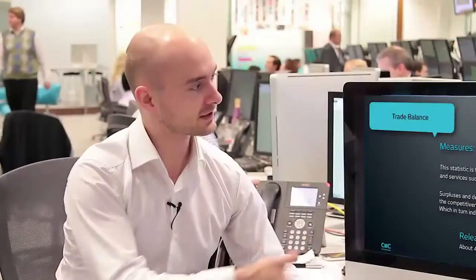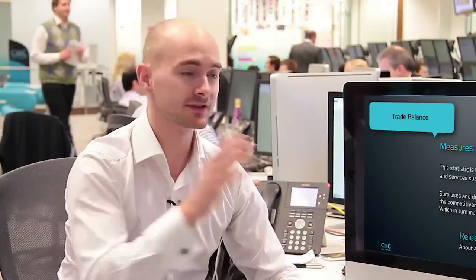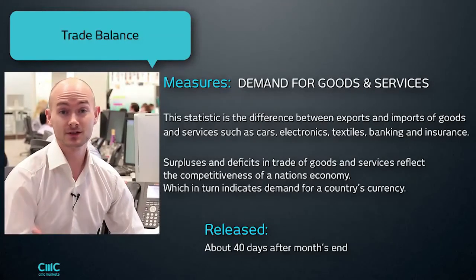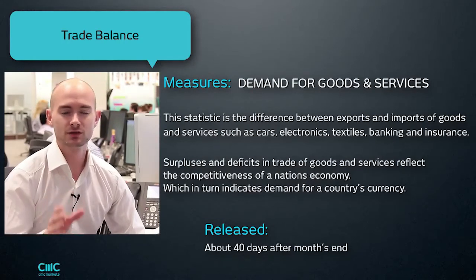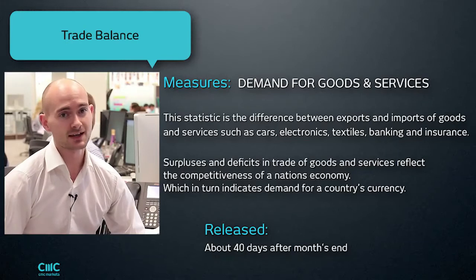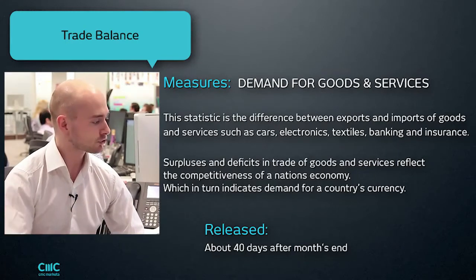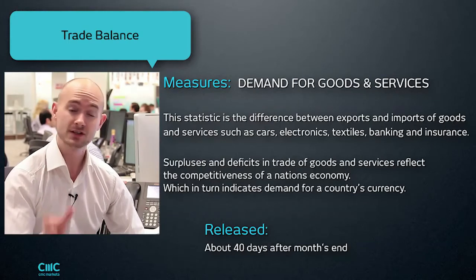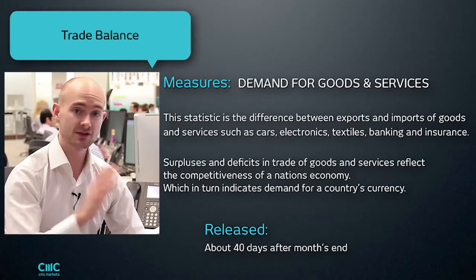For the purpose of this quick short video, we're going to look at some of the most important American bits of data that come out. Because generally, as it is the world's biggest economy, these data releases tend to have the biggest impact on the world markets. The first one we'll cover is the trade balance. The trade balance measures the demand for goods and services from a particular country between the rest of the world — essentially the difference between exports and imports. It measures the competitiveness of a country's firms. If lots of investment is leaving a country and not very much coming in, it usually means that country is not that competitive. It comes out in America about 40 days after the month's end and can have quite a big impact on equity markets, foreign exchange markets, and commodities.